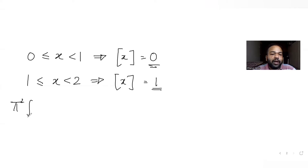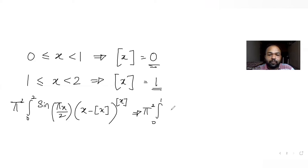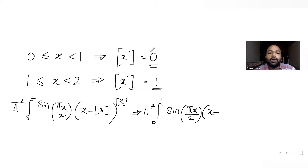So the expression π² times the integral from 0 to 2 of sin(πx/2) times (x minus ⌊x⌋) raised to ⌊x⌋ can be split at x = 1. The first part is π² times the integral from 0 to 1 of sin(πx/2) times (x minus 0) raised to 0, which is dx. This is because for x in [0,1), the greatest integer function equals zero.